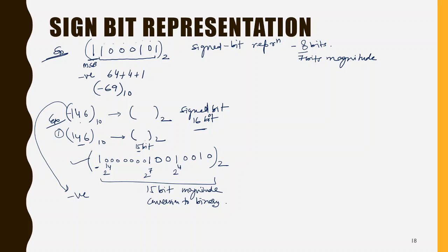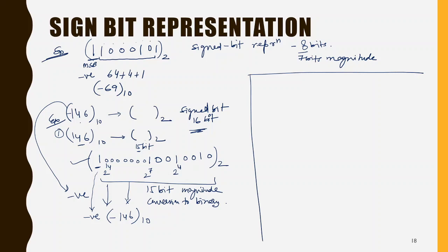The reverse procedure can also be done. If given this 16-bit signed number, monitor the MSB: if it is 1, the number is negative. The remaining 15 bits convert to decimal — they give 146. So the number is minus 146 in decimal. The MSB tells us the sign, and the remaining 15 bits give the magnitude.